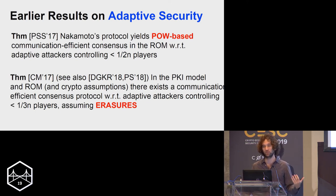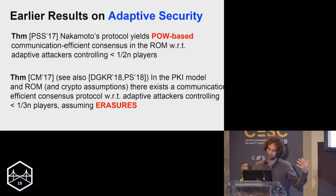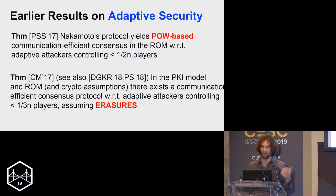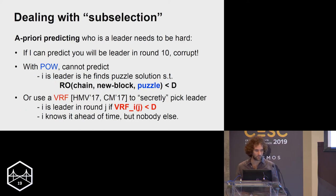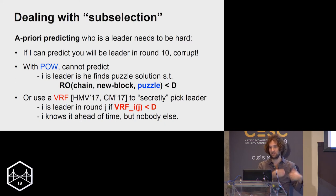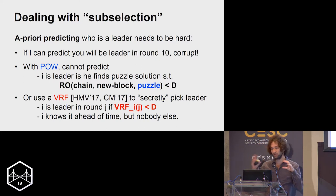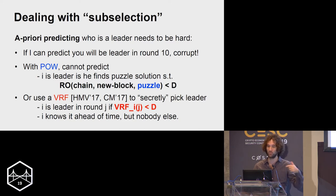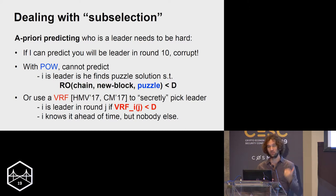It would be highly desirable to have a protocol that doesn't rely on erasures. To understand how proof of work and erasures help overcome adaptive corruption, recall the subselection issue: if the attacker knows who's on the committee, it can corrupt them. So we need committee membership to be hard to predict a priori. With proof of work in Nakamoto's protocol, nobody can predict who will be elected leader, because leadership is determined by applying a random oracle to the current chain, a new block, and a puzzle solution — nobody knows who will find the next puzzle solution.